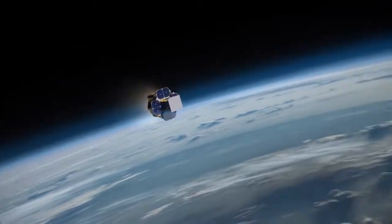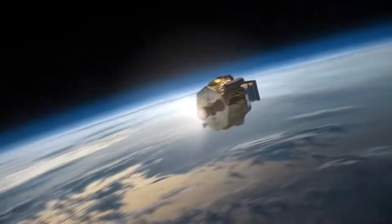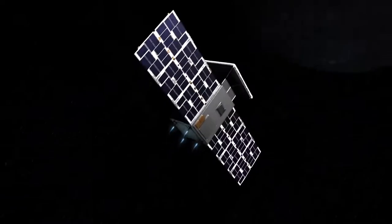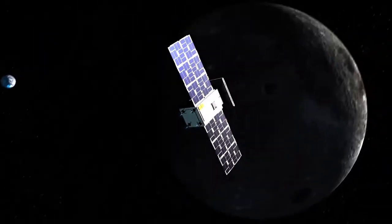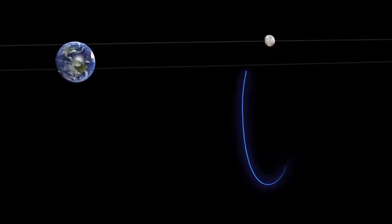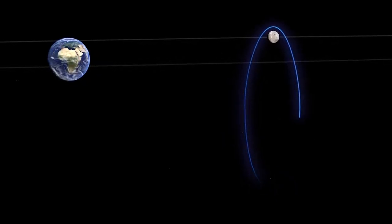The gravities of Earth, the Sun, and the Moon will help propel it into deep space. As it nears its destination, Capstone will use its propulsion system to enter an elongated path around the Moon.